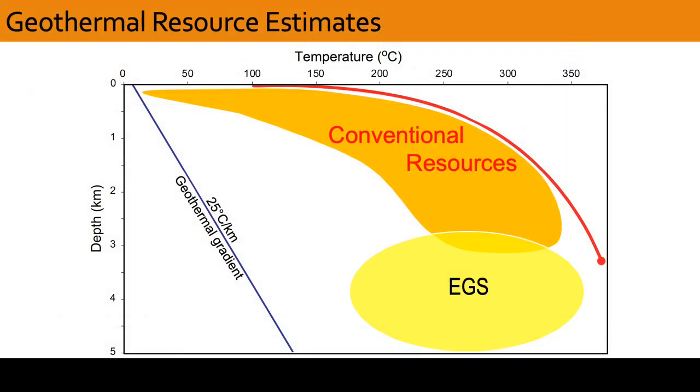Having seen how thermal energy is extracted, we can take this understanding to make a resource estimate. Remember, we are targeting a regime that is generally hotter than 200 degrees C and at greater than 3 kilometers depth. To find such resources, we have to locate regions with elevated heat flow of 50 degrees C per kilometer or greater.